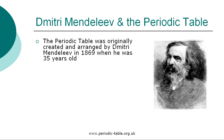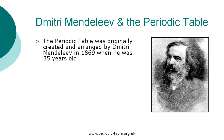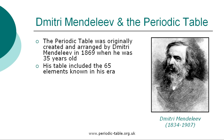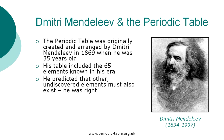The Periodic Table was originally created and arranged by Dmitry Mendeleev in 1869 when he was just 35 years old. His table included the 65 elements known in his era. He predicted that other undiscovered elements must also exist — he was right. Nearly double the number of elements are now included in the Periodic Table. His table did not include any of the noble gases like helium and neon, which were discovered by William Ramsey in 1894.